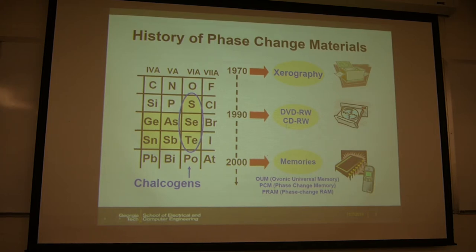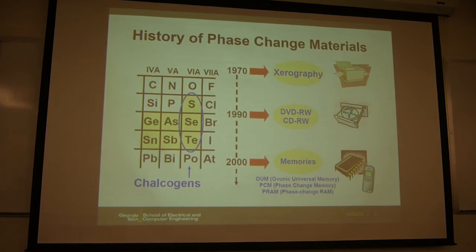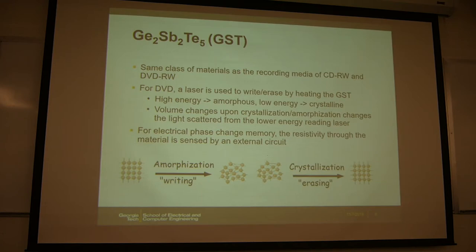Actually it's already been used in your daily life. For example, your DVD or your CD — it's made of this phase change material. The typical one is GST-225, and you have already used it in the DVD or CD.